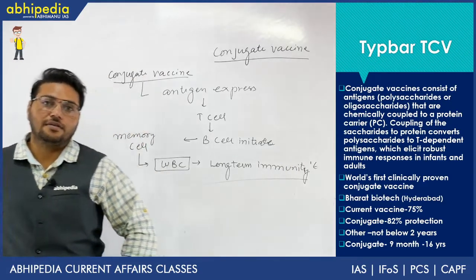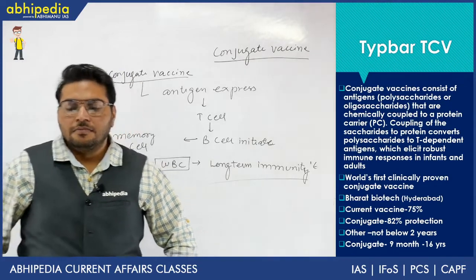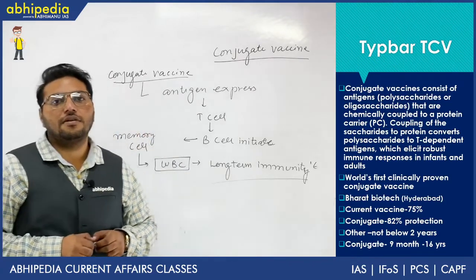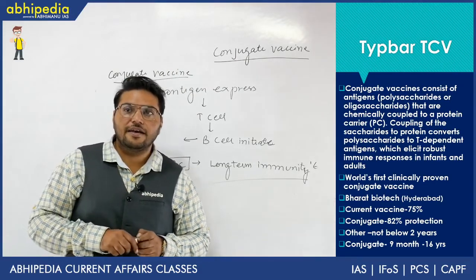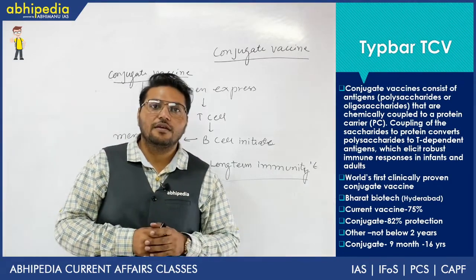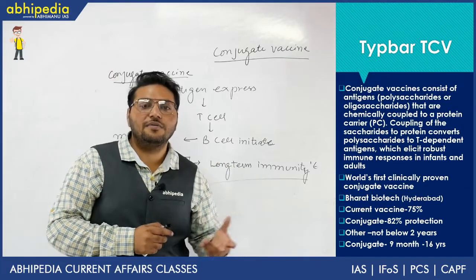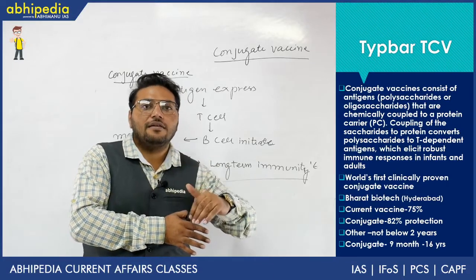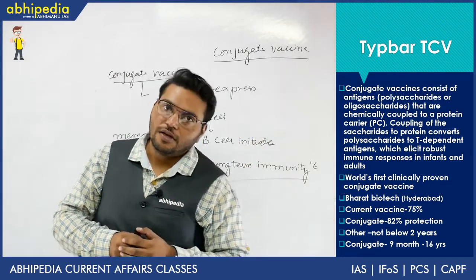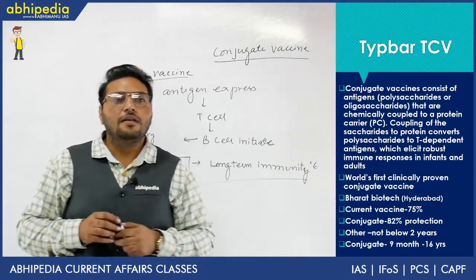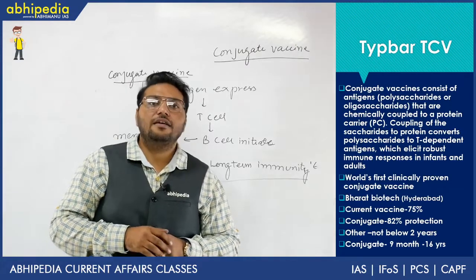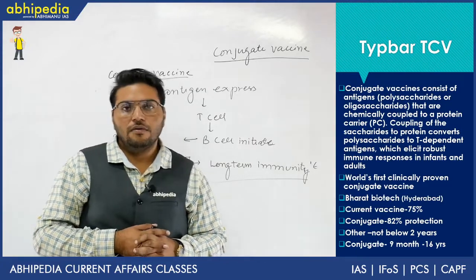This is all about conjugate vaccine and how long-term immunity is created. As written in the slide — TiBar TCV is the world's first clinically proven conjugate vaccine, made by Bharat Biotech in India. The current normal vaccine provides 75% protection while conjugate gives 82%. The normal vaccine cannot be given below 2 years, whereas TiBar TCV can, because it promotes T cells, and T cells respond very quickly in small children. T cells promote B cells, leading to long-term memory. If any antigen comes in the future, it can work effectively. Please subscribe, like, and share our YouTube channel. Thank you very much, God bless you all.